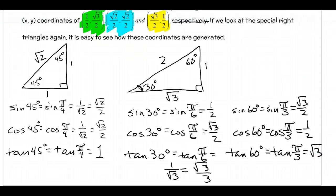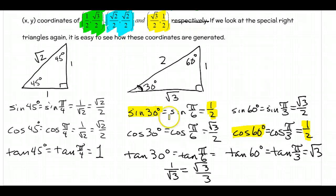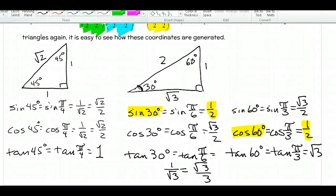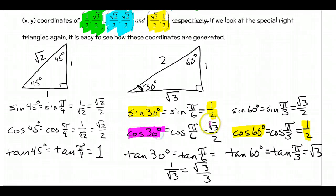Here's a little preview of things to come. Notice that 30 and 60 are complementary — any two angles whose sum is 90 are complementary. The sine of 30 equals 1/2, and the cosine of 60 also equals 1/2. Sine and cosine are what we call co-functions. Similarly, cosine of 30 is root 3 over 2, and sine of 60 is also root 3 over 2. Complementary angles with co-functions must be equal, and we'll look more at that later.